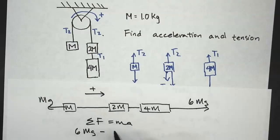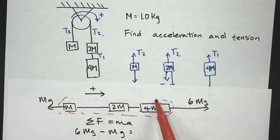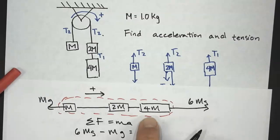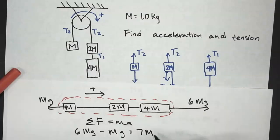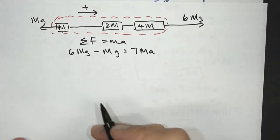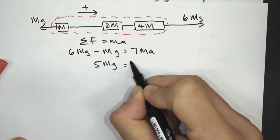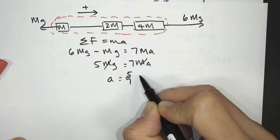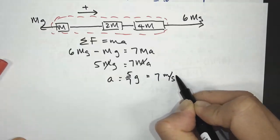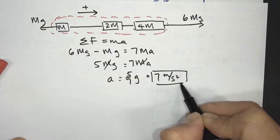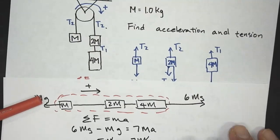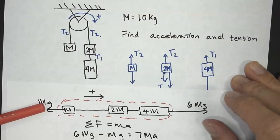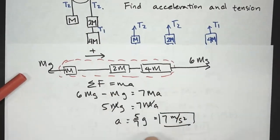Net force equals: 6Mg minus MG equals 7Ma. So 5Mg equals 7Ma, the M's cancel out, and A equals 5g over 7 — which gives the same 7 meters per second squared. So you can solve this two ways: making each block its own system, or making everything your system, and then solving for the acceleration.